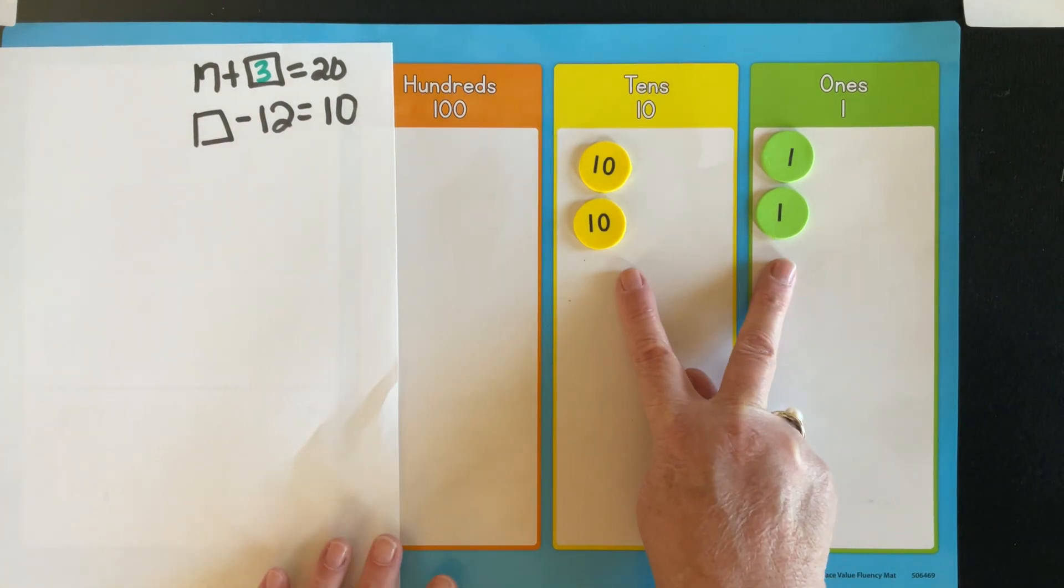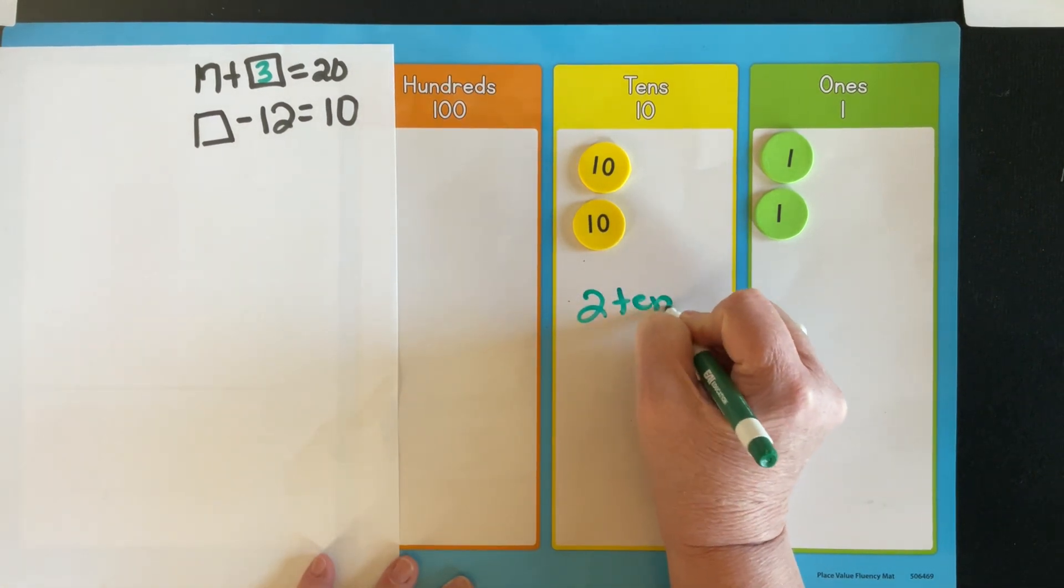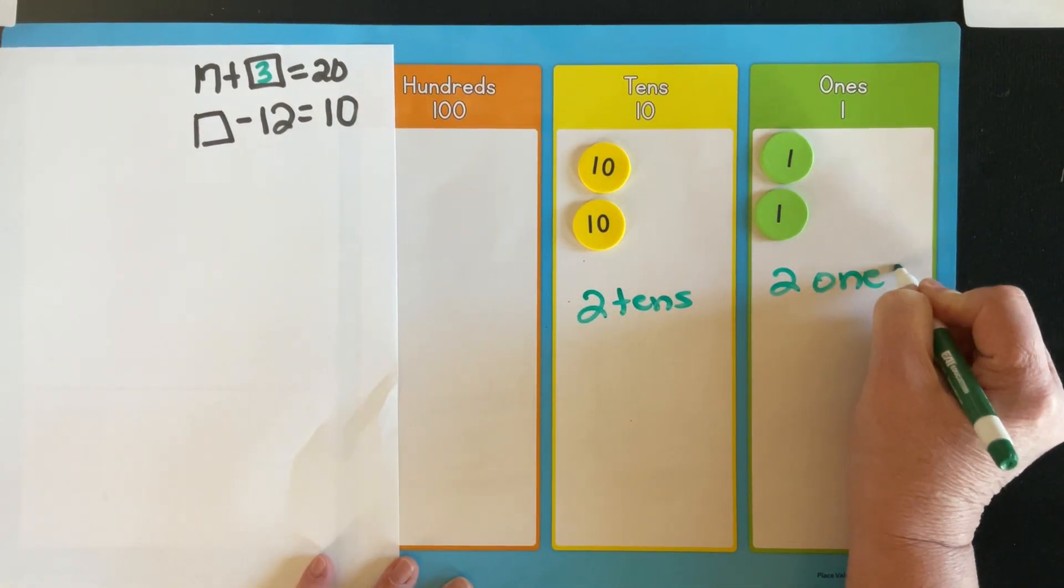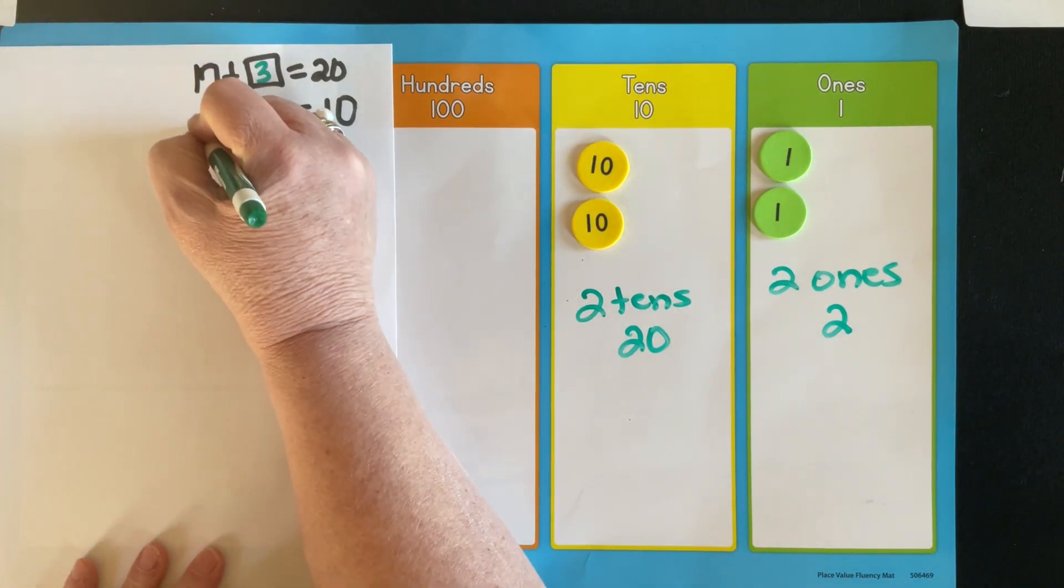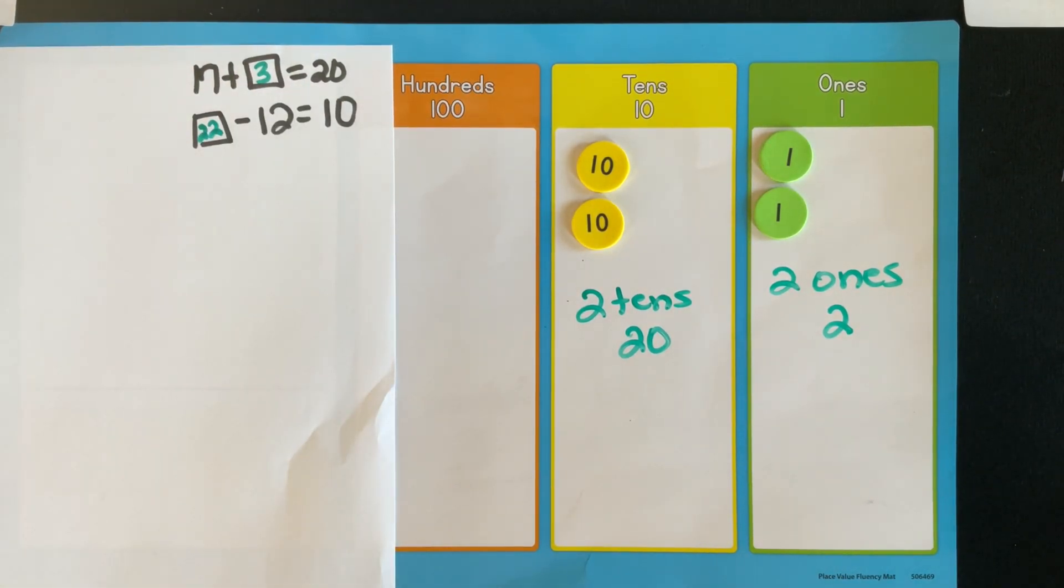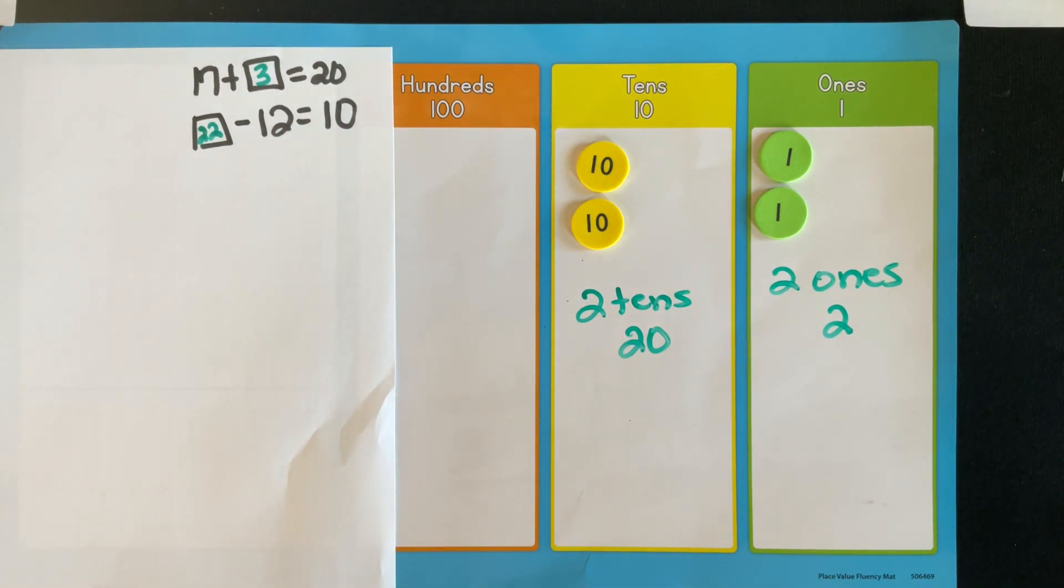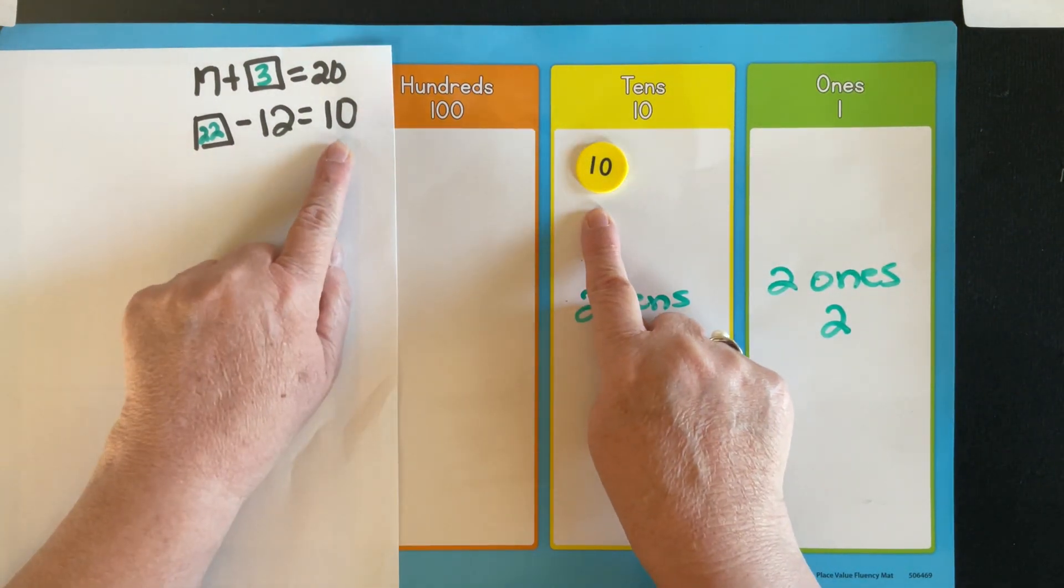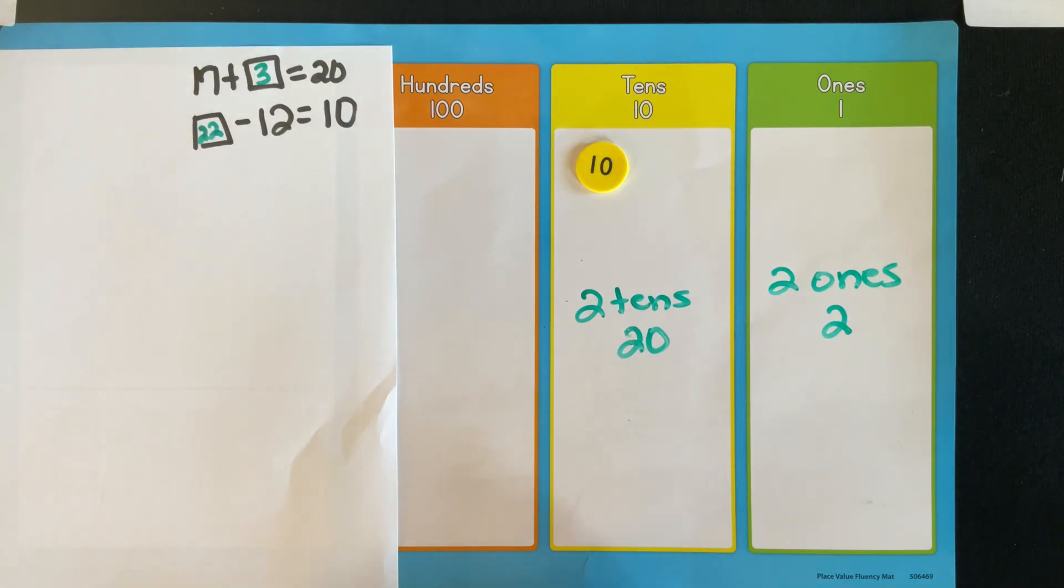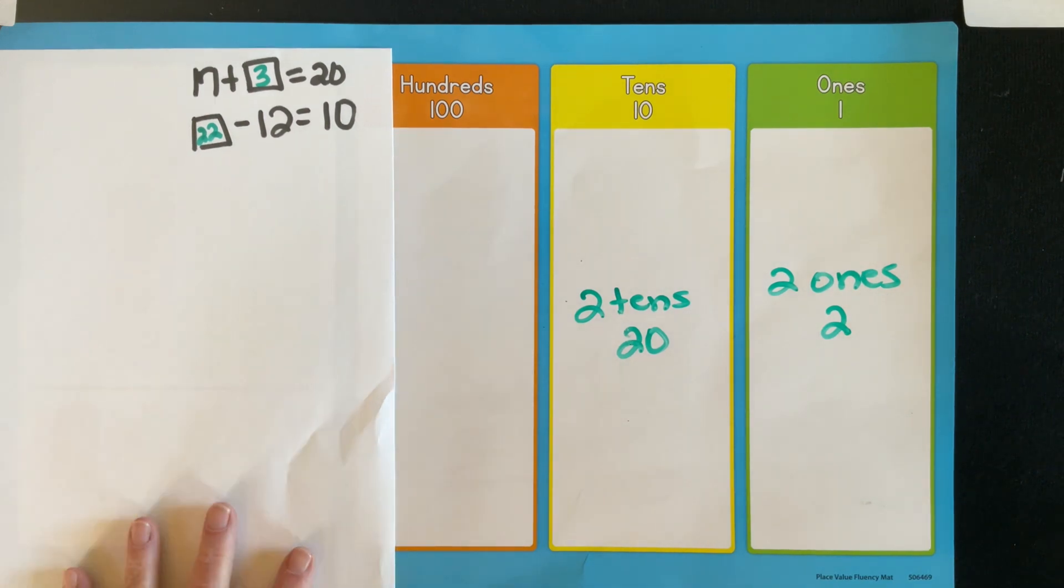So now we're looking at 22. So if I had two 10s and two ones, the standard form of writing these as numbers is 22. This is a great opportunity here to say, okay kids, now that we think that's the answer, let's check this and make sure it's the answer. If you started with 22 and you removed 12, did you indeed end up with 10? And that also reinforces another standard that says that the second grade students have to know the relationship between addition and subtraction.